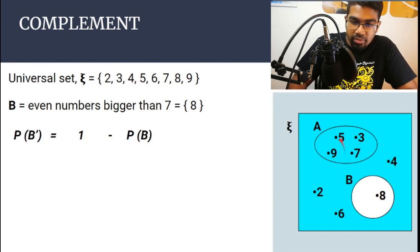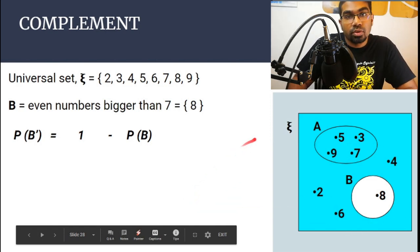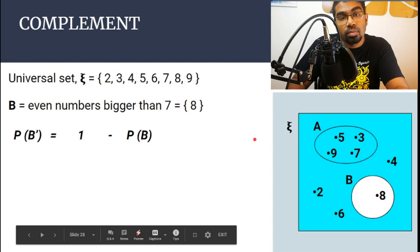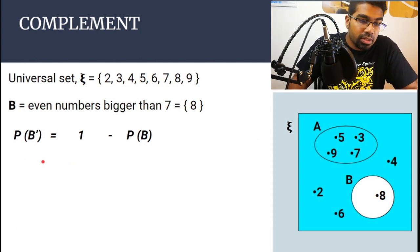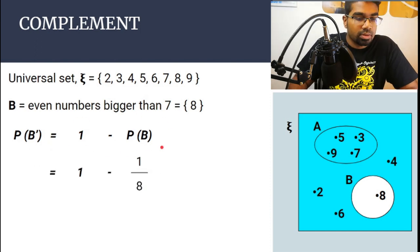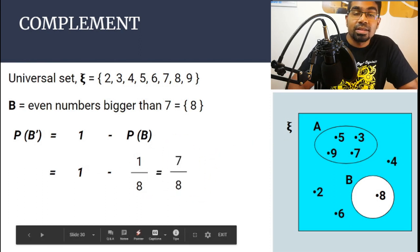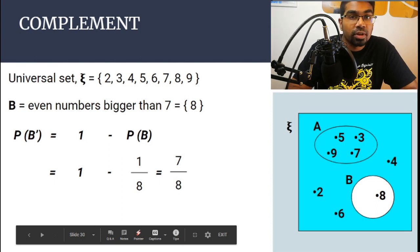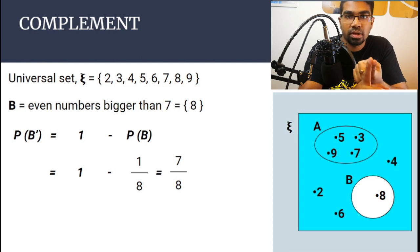You can calculate it manually by counting the elements of B prime over the total, but sometimes you only have the probability itself. In that case, use the formula: P(B prime) = one minus P(B). So we get one minus one over eight, which is seven over eight. That's how we find the probability of the complement of an event.